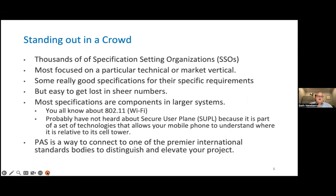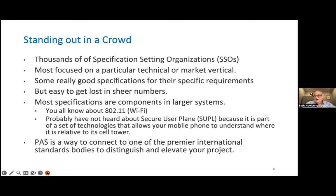There are probably hundreds of different specification-setting organizations around the world, most focused on a particular technical market. They produce good specifications for their specific requirements, but it's easy to get lost in the sheer numbers. For example, everybody knows 802.11 because that's Wi-Fi. You've probably never heard of Secure User Plane Location — SUPL — which is a set of technologies that allows your mobile phone to understand its position relative to a cell tower. You rely on SUPL but don't know it's there, because it's an ingredient — like the flour in a cupcake. Submitting your specification to ISO through the PAS process connects you to one of the most premier international standards bodies, which can distinguish and elevate your project and often find uses you haven't considered.